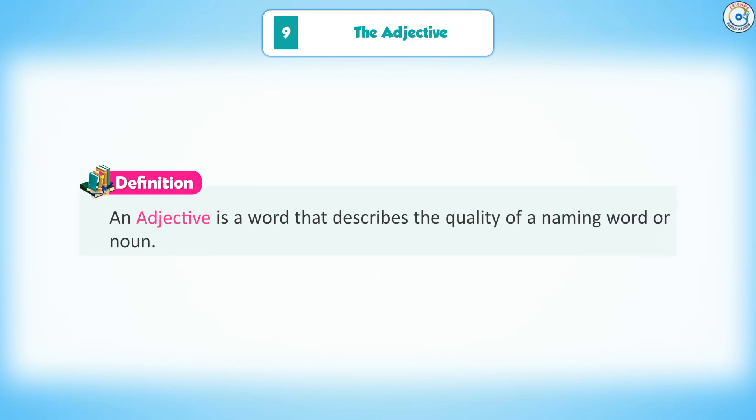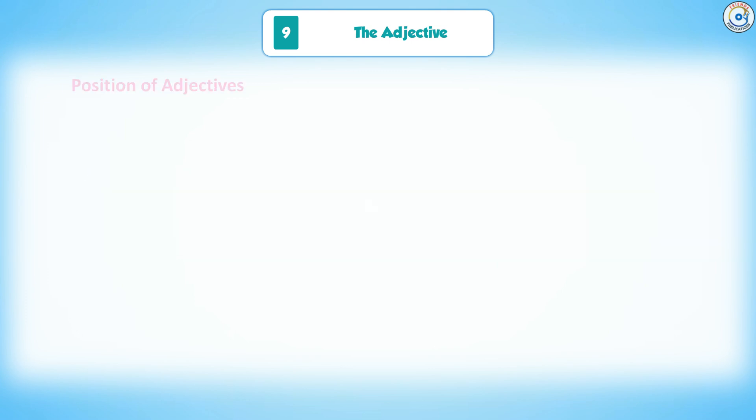Definition: An adjective is a word that describes the quality of a naming word or noun.